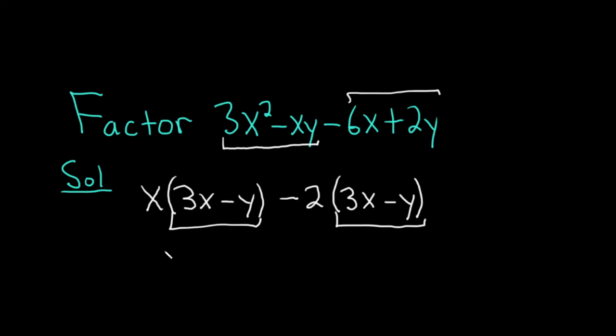This becomes x minus 2. And then we have this common factor, which we'll write at the end, 3x minus y. And that's it. That would be the final answer.